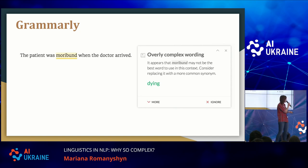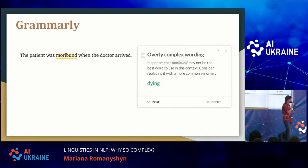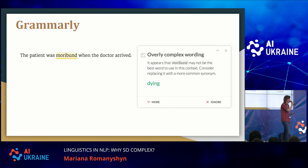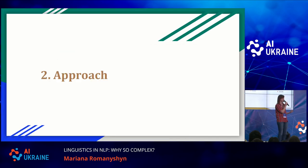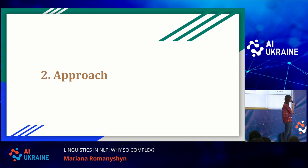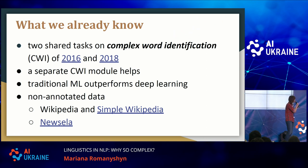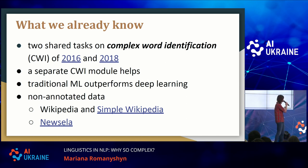At Grammarly, we also had to do a task like that, specifically for cases when a person is writing in a simple context and wants to appeal to a broader audience. Say you're a writer, blogger, or journalist, and you're using a word that will not be familiar to people who will read your blog, post, or article. We would want to correct that to a simpler one. I hope you understand why text simplification is needed. Now we can see what the ways of solving it are.